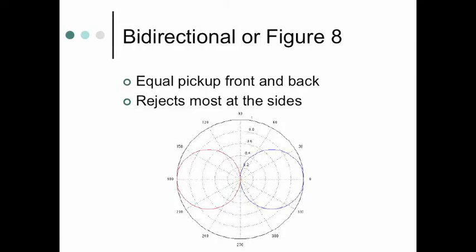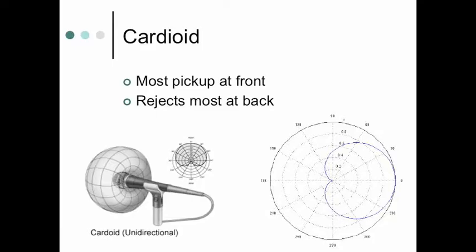Here's a bidirectional. Bidirectional or figure eight, it's sometimes called. Equal pickup from the front and the back. Rejects most at the sides. So, you see the polar pattern, how it looks.